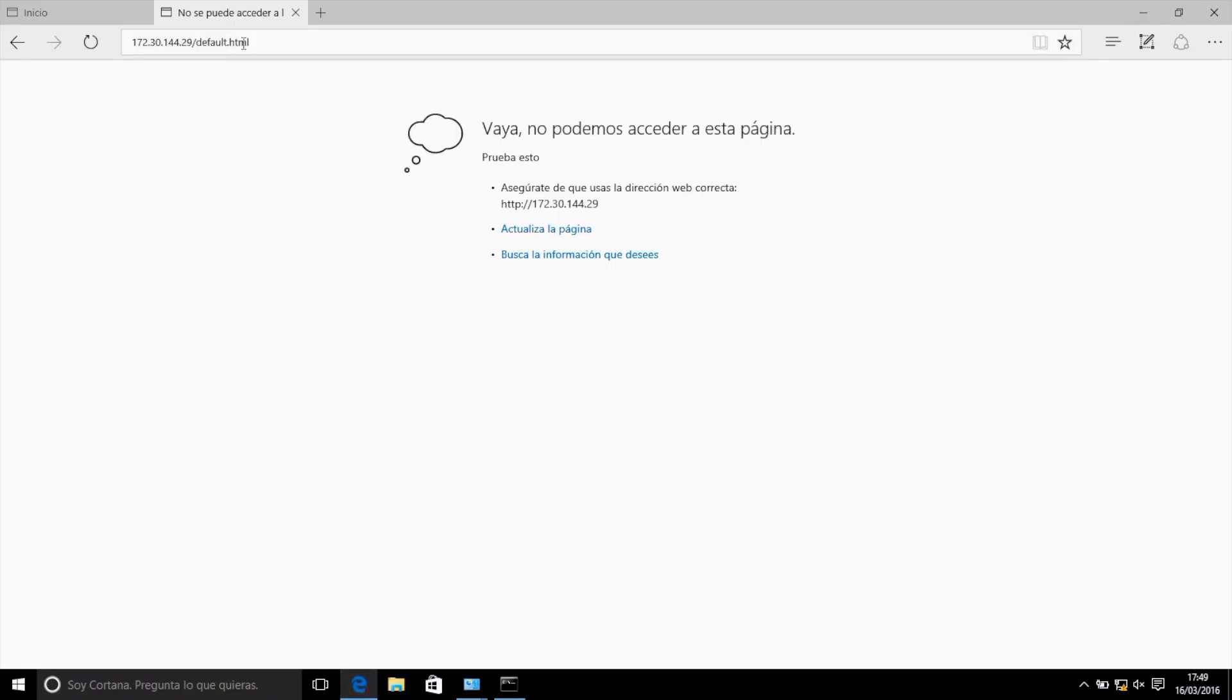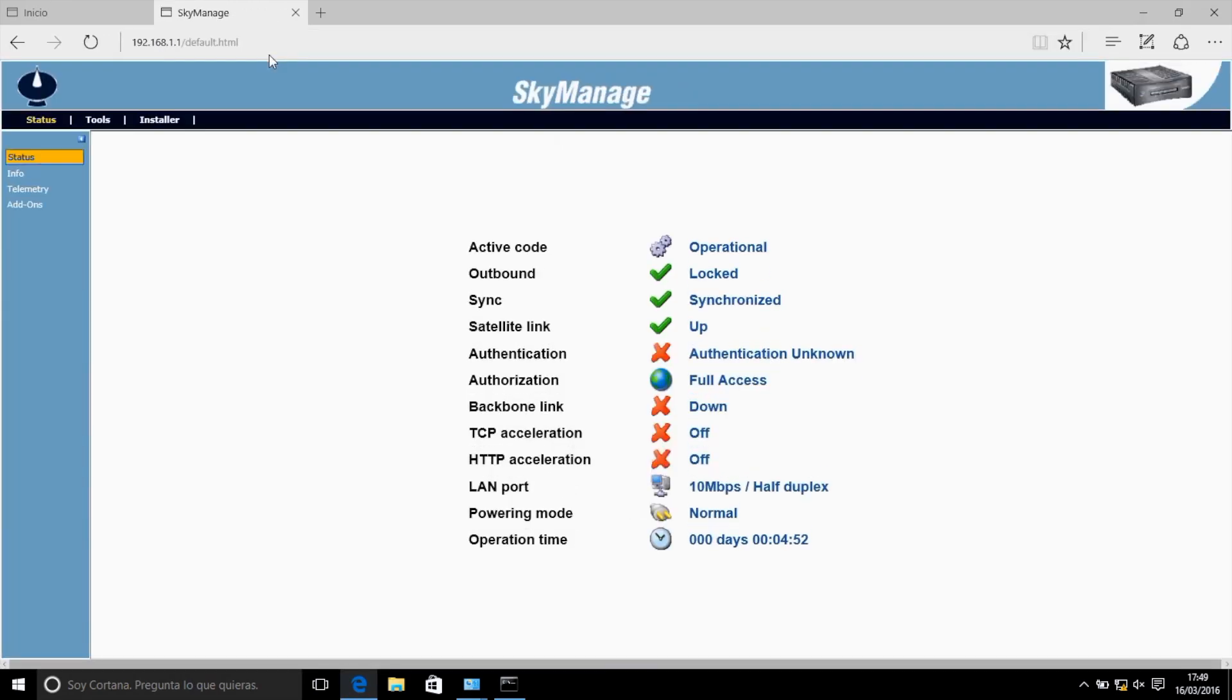After doing so, access the terminal by entering the correct address in the internet browser. By doing so, you will access the terminal's home page status, which will show us a summary of its status.